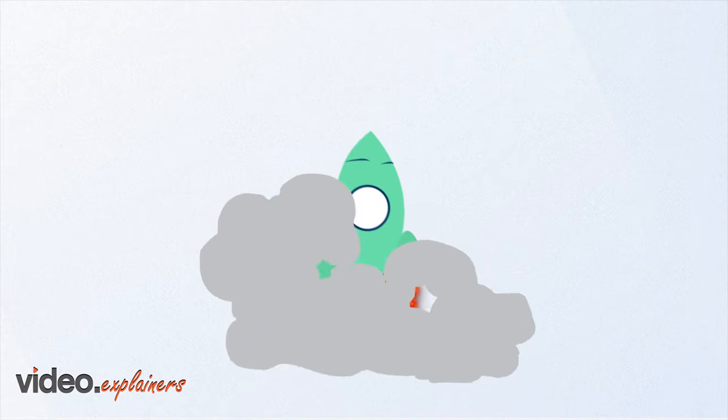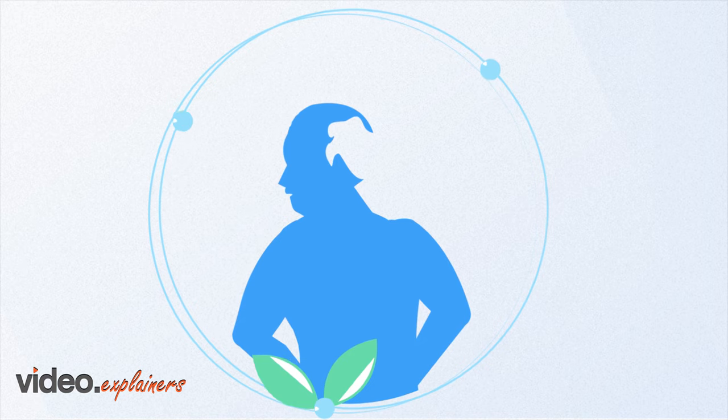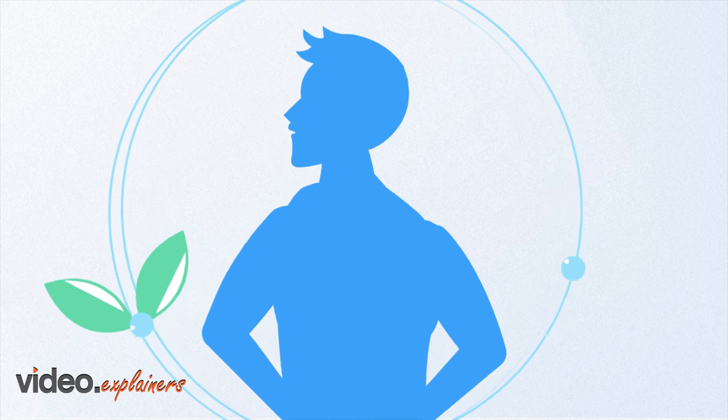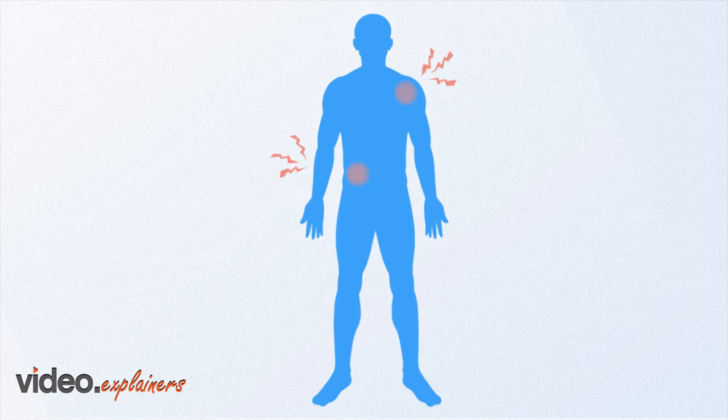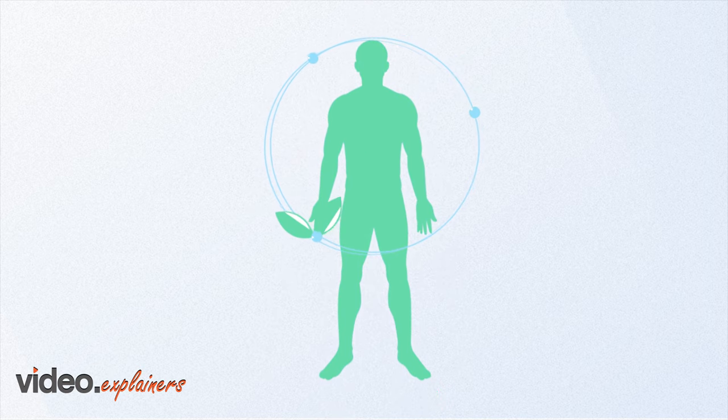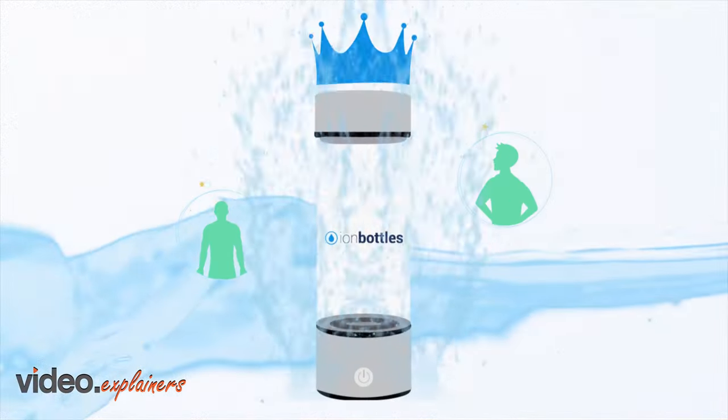Ion Bottles helps boost your natural energy levels, slow down the visible aging process through increased free radical fighting antioxidants, and help your body recover faster after injury or workout.